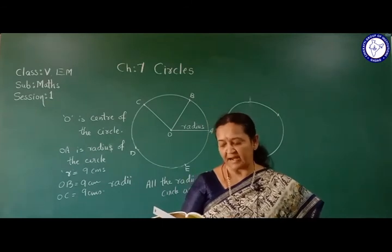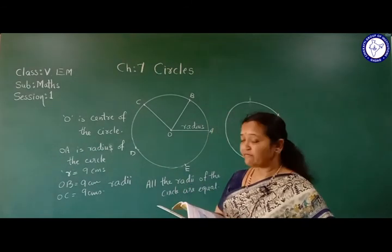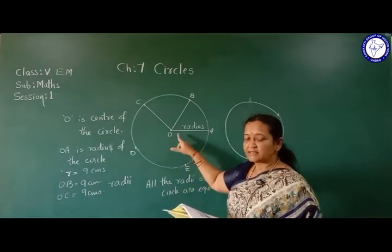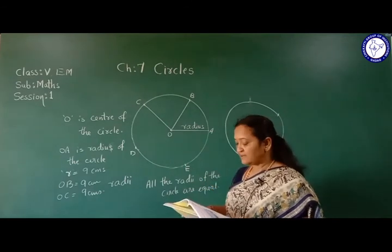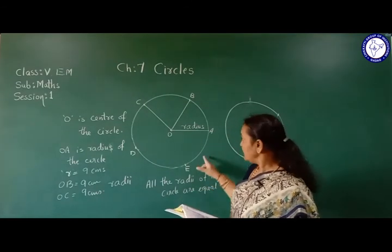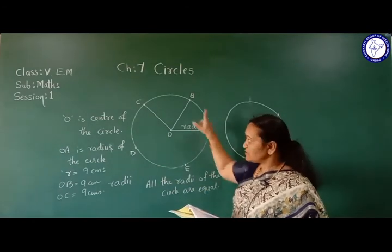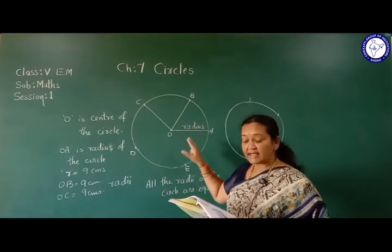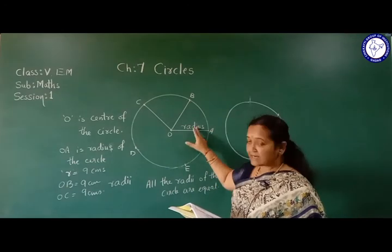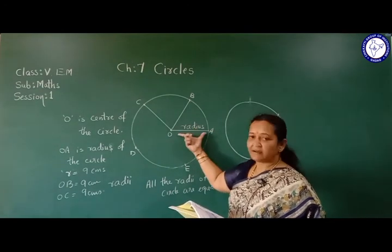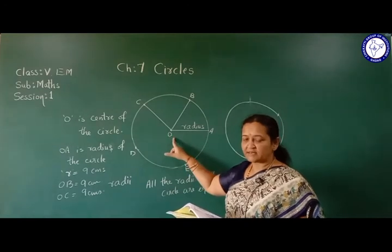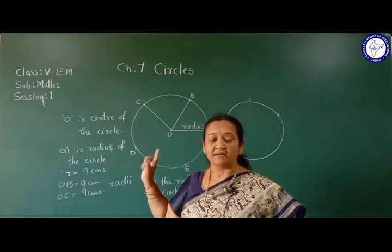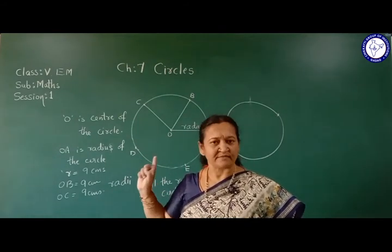Every circle will have a centre and a definite measurement of the radius. We also learned that every circle has a centre - here O is the centre of the circle. Now, the centre and radius are not part of the circle - this is the circle. The radius is not part of the circle, and the centre is not part of the circle. But they show the existence of the circle. To draw a circle, we require a radius and a centre, but they are definitely not parts of the circle.